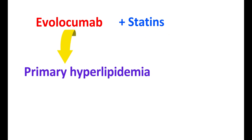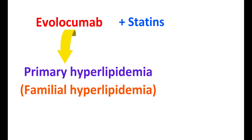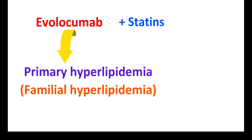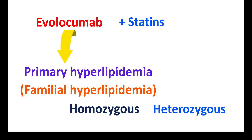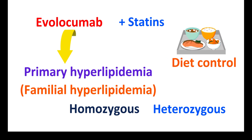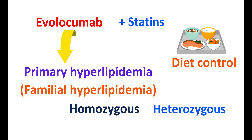Similarly, Evolocumab can be given along with statins for the treatment of primary hyperlipidemia. This primary hyperlipidemia is also called familial hyperlipidemia, which is associated with elevated levels of LDL cholesterol. It is a genetic disorder that may be linked with either a single gene — where it is called homozygous — or with two genes, called heterozygous. Evolocumab can be given for both homozygous and heterozygous familial hyperlipidemia, and along with diet control and statin therapy, it can significantly control LDL cholesterol levels and reduce the risk of mortality.